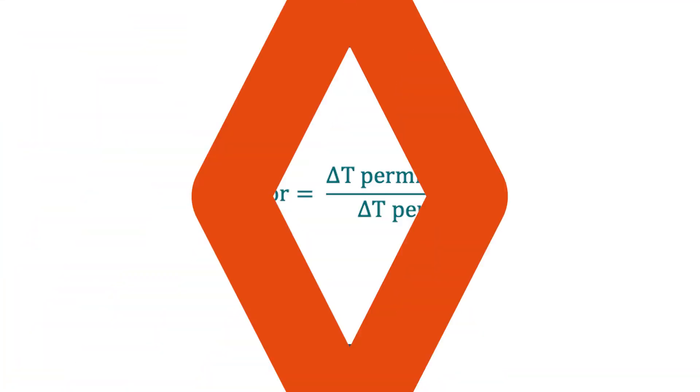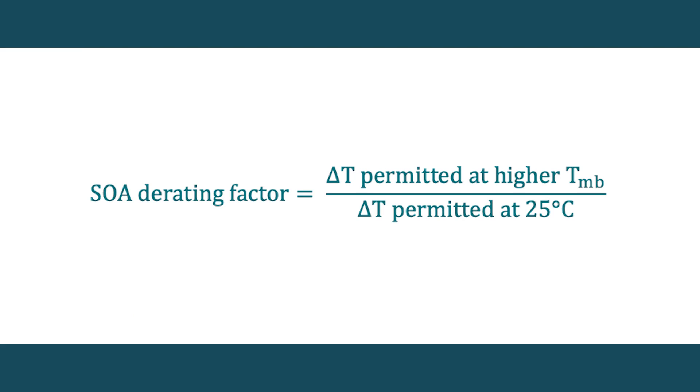Most MOSFET data sheets rate the SOA graph at 25 degrees C. So how do we find the SOA performance for MOSFETs in hotter environments? Well, as a rule of thumb, we can use current derating by dividing the permitted temperature increase in the hotter environment by the permitted temperature increase at 25 degrees C.